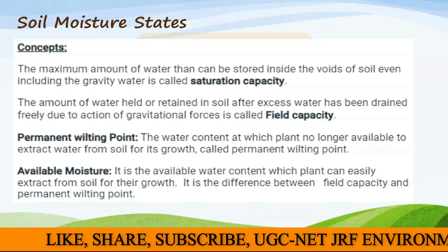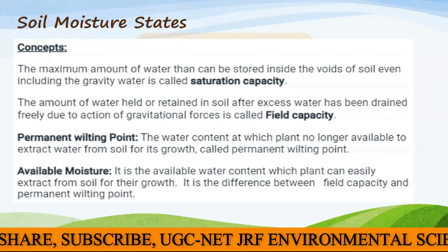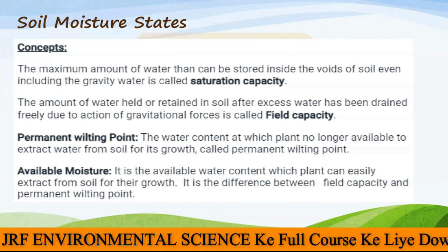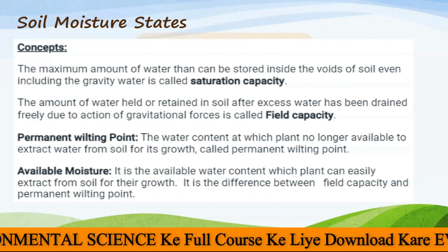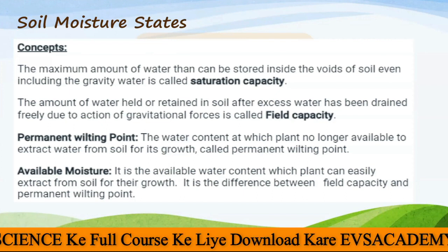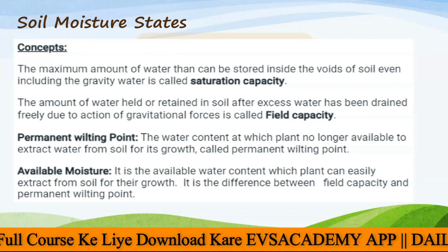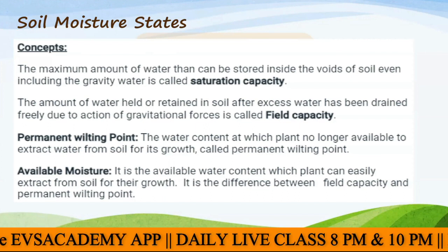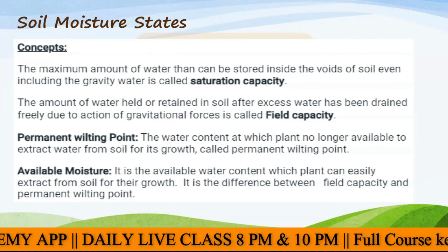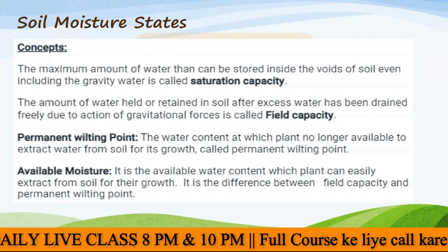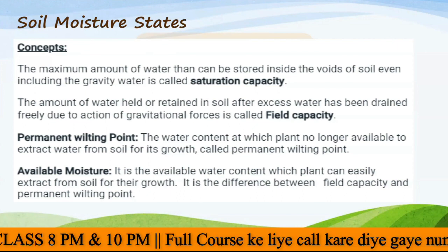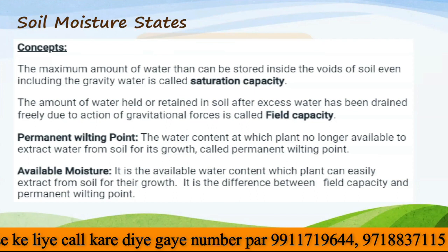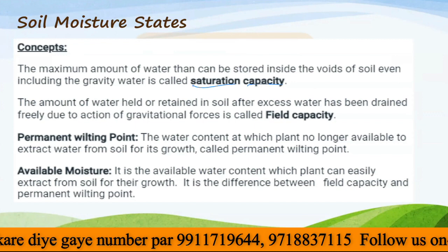Then we have the different soil moisture states. The maximum amount of water that can be stored inside the voids of the soil, including the gravitational water, is called the saturation capacity. This is the maximum amount of water that can be held by the soil volume including all pores and all available spaces — if all are filled with water, that is the saturation capacity of that soil.